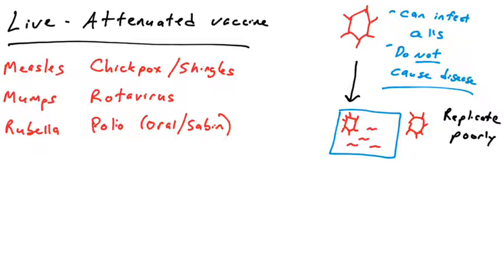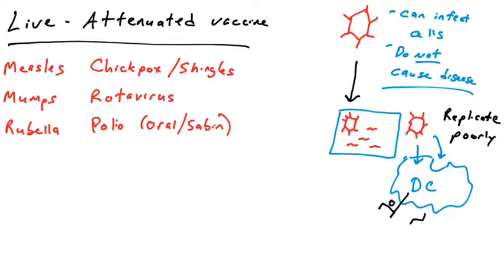These viruses have also lost their ability to replicate at typically very high numbers — they actually replicate quite poorly. They can still infect your cells, they can enter your cells, they can produce viral genetic material and viral protein, but they're not doing such a great job at it. This allows your immune system to mount a wonderful attack against that pathogen because it's a real infection.